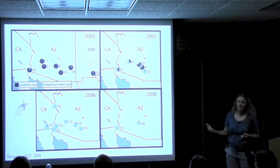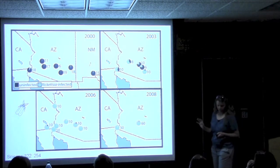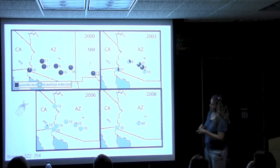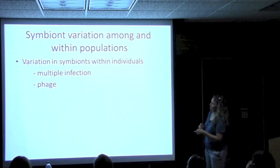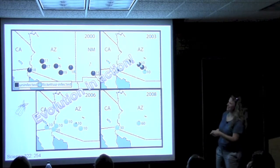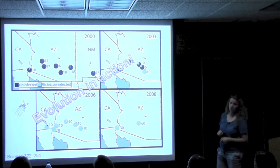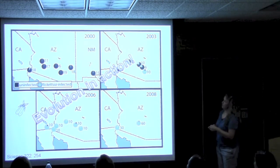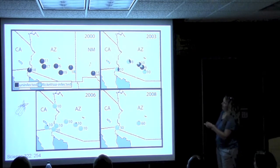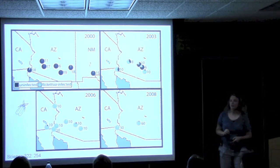Given all that, it's not surprising that infection frequency varied dramatically over the course of the study. In the year 2000 they surveyed these populations, and essentially everybody was uninfected except for one individual in Yuma, Arizona, that was Rickettsia-infected. Fast forward to 2003 and essentially all the populations were mixed, and by 2006 virtually every whitefly they looked at was Rickettsia-infected. That trend stayed when they did further samples in 2008.